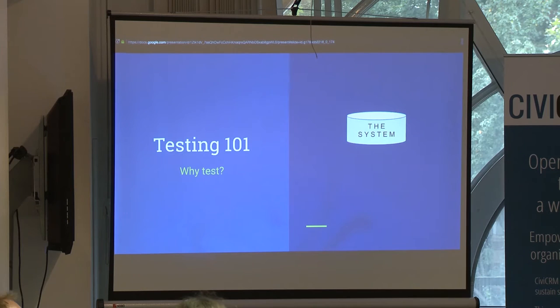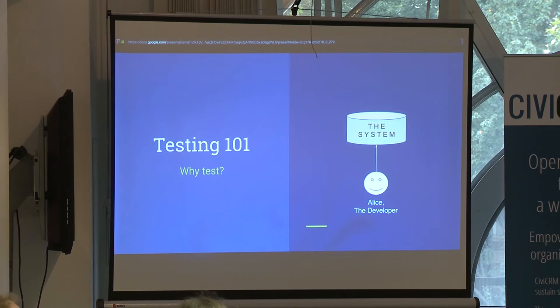Testing 101 — why test? CiviCRM is a software system, but there are many systems out there. The system begins with some developer working on it. Alice is a very happy, friendly developer. She creates some screens, shares them with her users, the users like it, everyone's happy. When the users say they need a change, Alice makes the change and it just works. It works mostly because Alice, the single developer, understands the system.